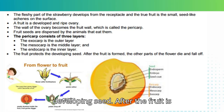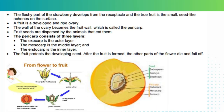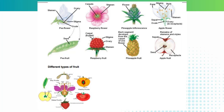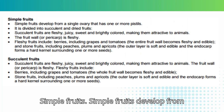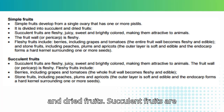The fruit protects the developing seed. After the fruit is formed, the other parts of the flower die and fall off. Simple fruits develop from a single ovary that has one or more pistils; they are divided into succulent and dried fruits.